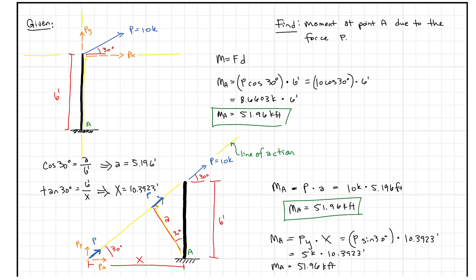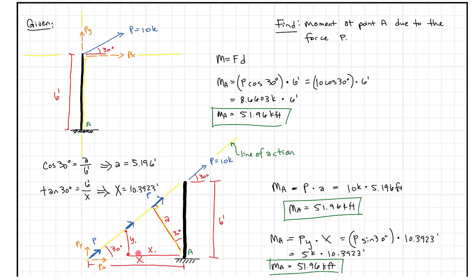This becomes super useful when solving using the method of sections. You can look at a force and apply it anywhere along its line of action — as long as it stays on that line — and you'll get the same moment every time. If you already know dimensions x1 and y1 for some convenient point, that might be a practical choice. The key idea is: apply the force anywhere on its line of action and you get the same moment. Hope this helps — keep working hard and moving onward and upward!